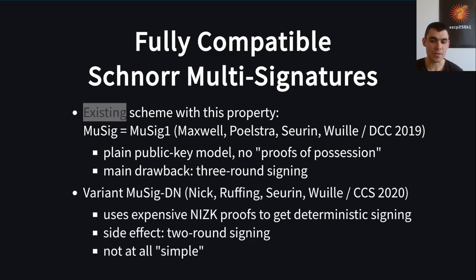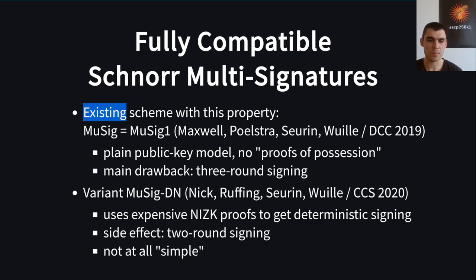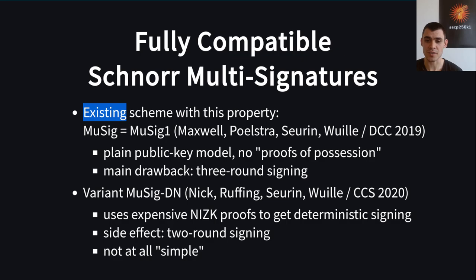We recently worked on another variant called MuSigDN, where the N stands for deterministic nonces. The primary goal was not to obtain a two-round scheme but to achieve a deterministic signing protocol. The background is that discrete logarithm-based signature schemes usually need a random nonce. In single-signer signatures, the nonce is in practice derived deterministically from the secret key and the message to avoid catastrophic failures in real-world random number generators — for example, repeating randomness. If you reuse randomness as a signer, then everyone can extract your secret key. Interestingly, you can't do this deterministic derivation easily in multi-signature schemes; if you apply the same techniques naively, the security of the resulting scheme breaks down entirely.